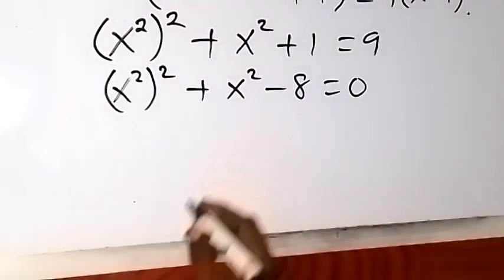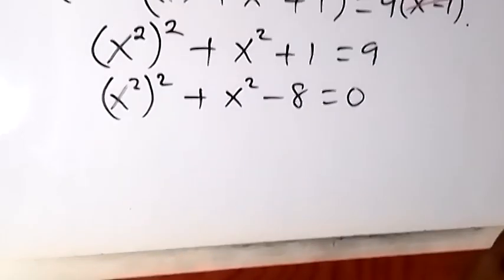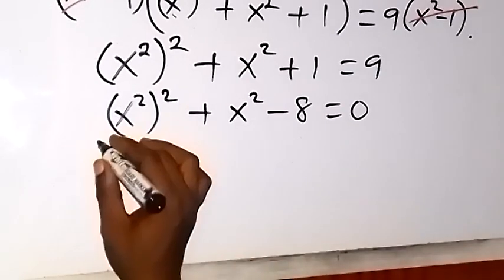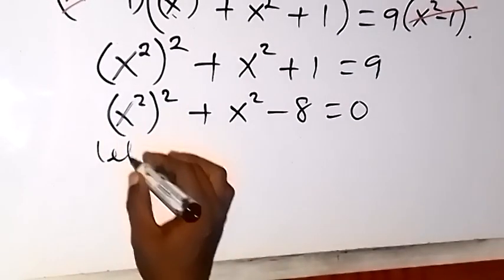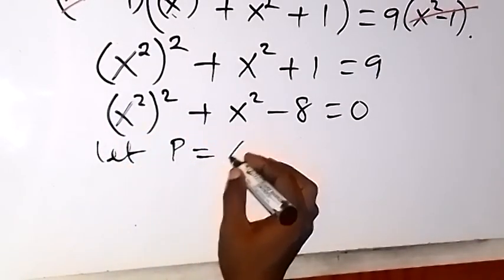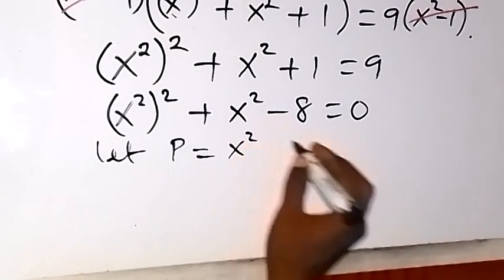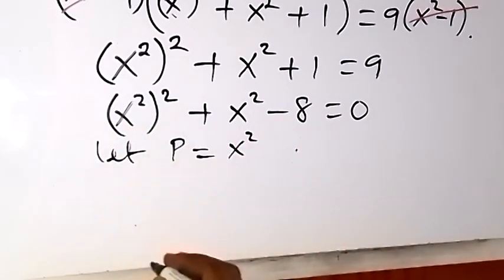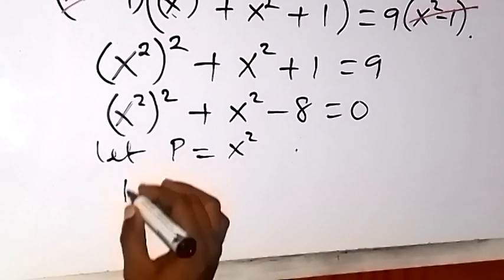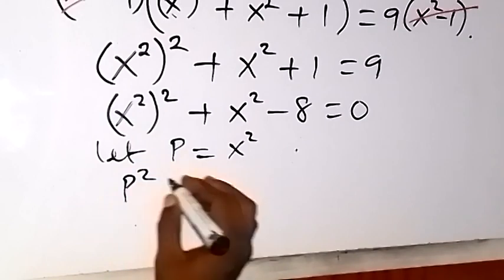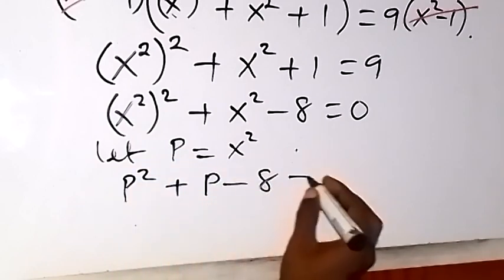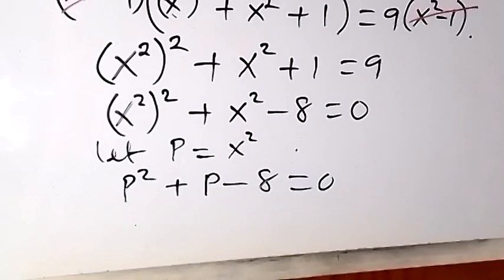Then let's represent x squared with a letter. Let p equal x squared. Then we can rewrite this as p squared plus p minus 8 equals 0, which gives us a quadratic equation.